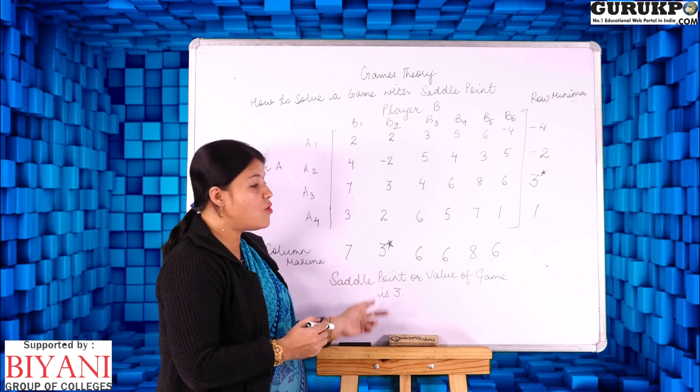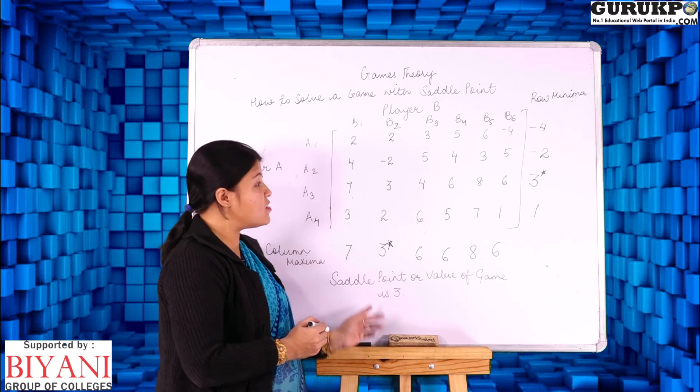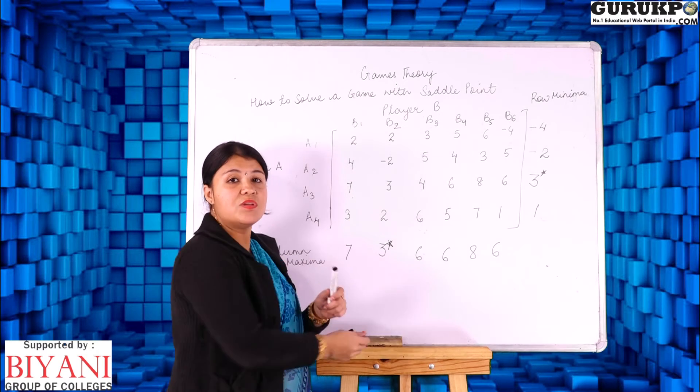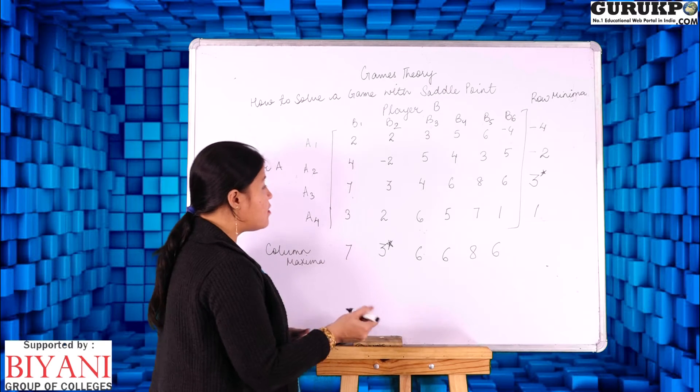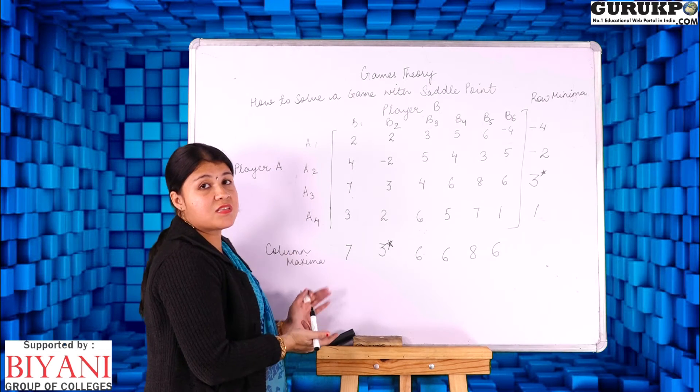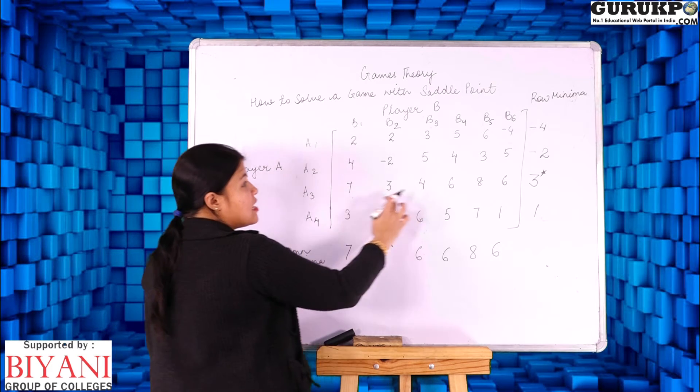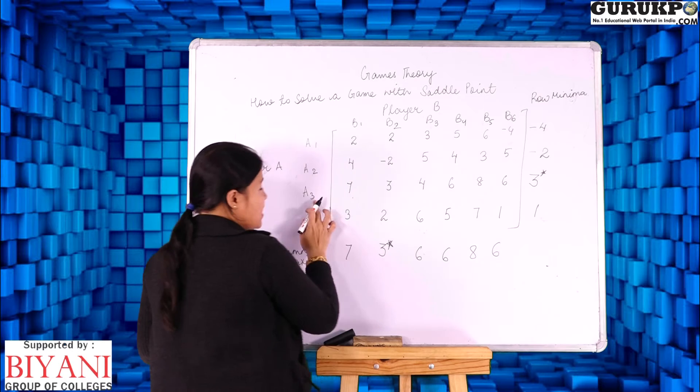Now along with value of game we have to find out the strategy for row player and strategy for column player. Now to indicate the strategy for row player there are two types of techniques through which we can indicate the strategy for row player. One is where there is saddle point, the saddle point value is at A3.